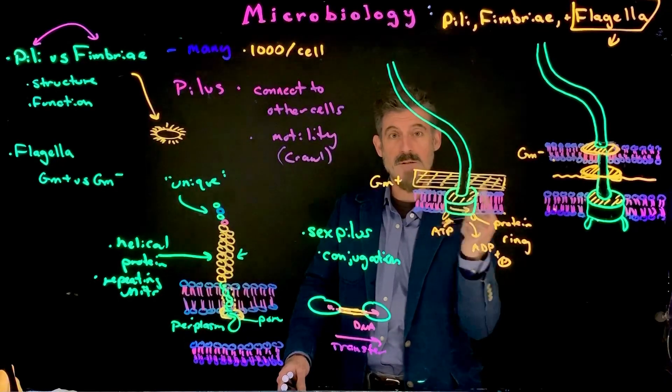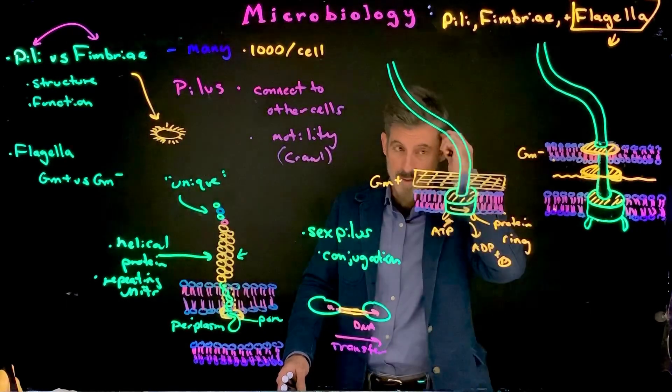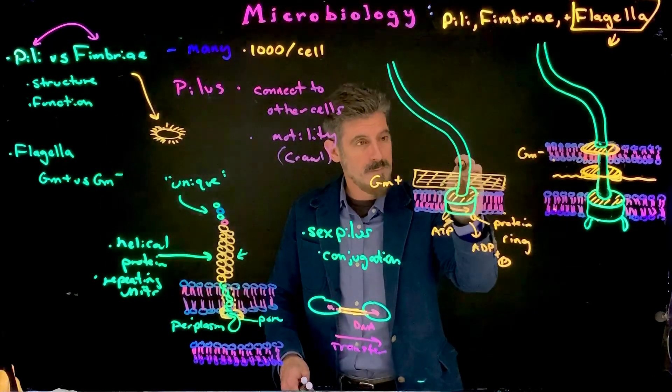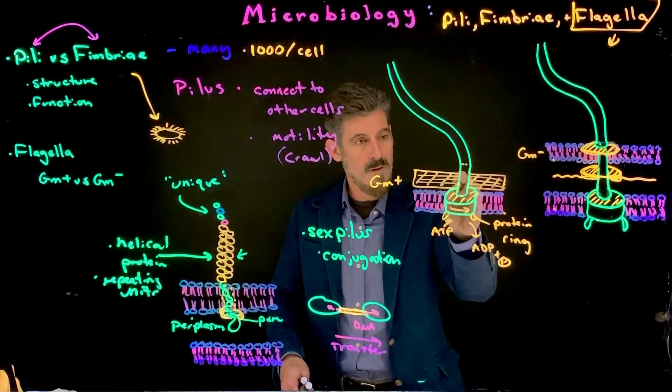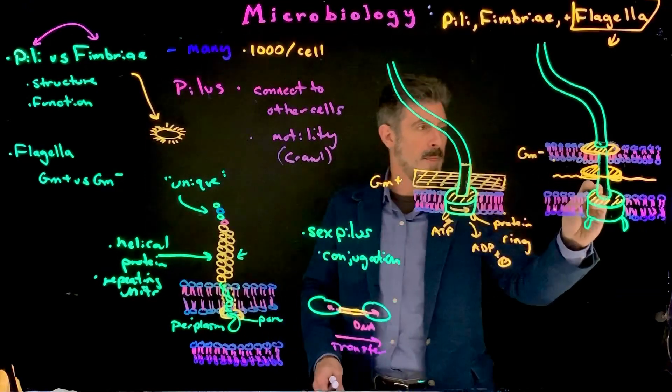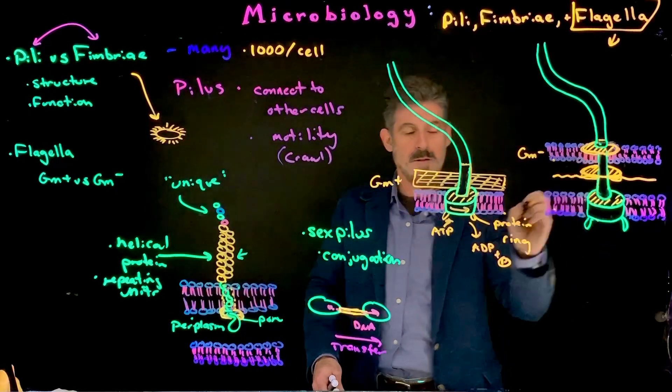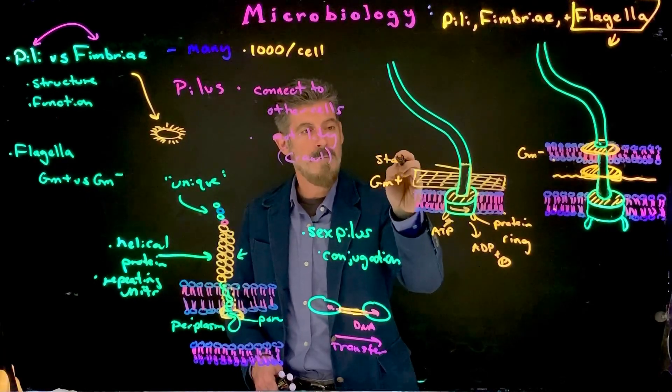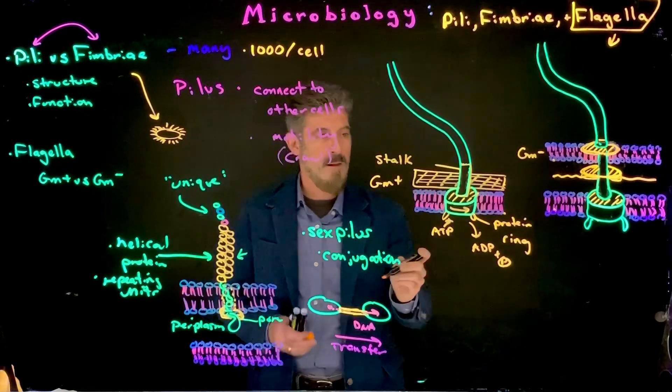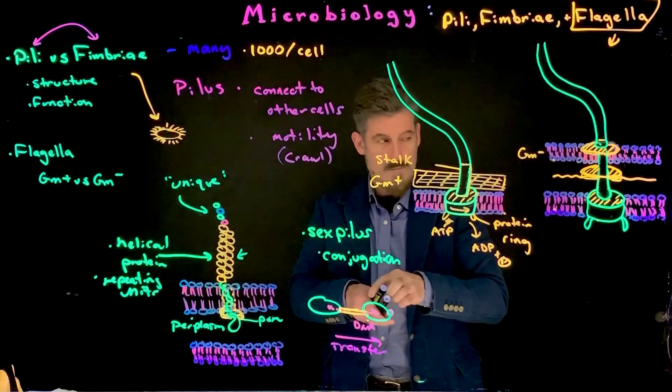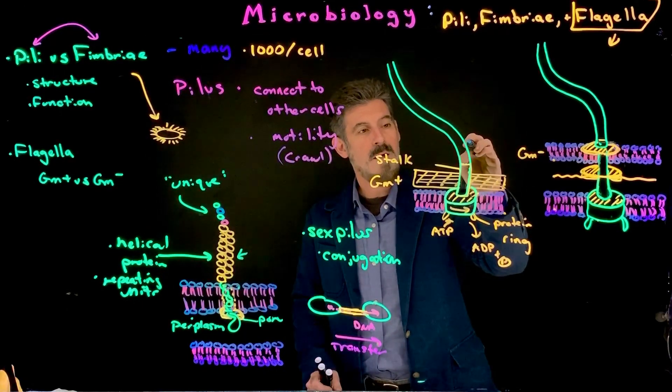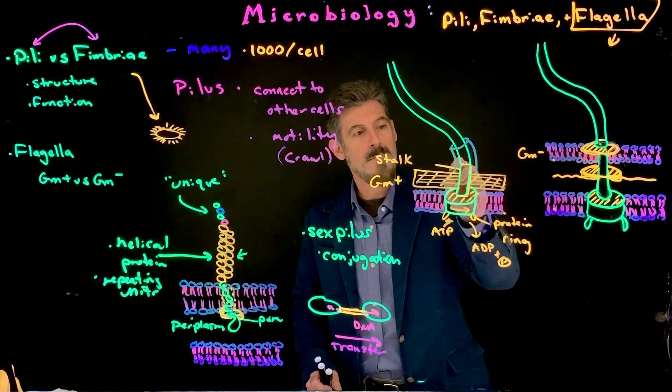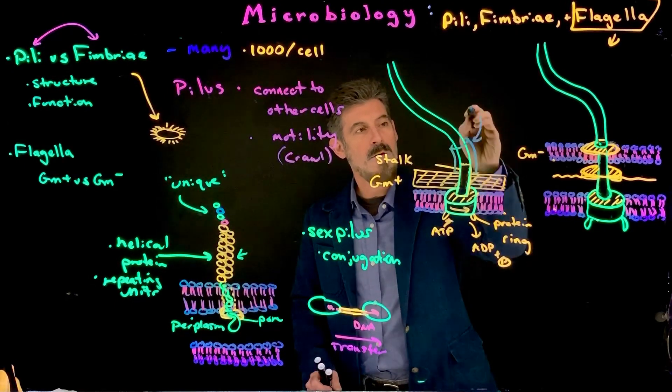So, the protein ring will actually start to spin and move around and rotate. Now, attached to that, it's going to be a little straight piece like this. Okay, you can see it going up here. This is the stalk. And then, right here on the outside is going to be a curved kind of protein sheath.